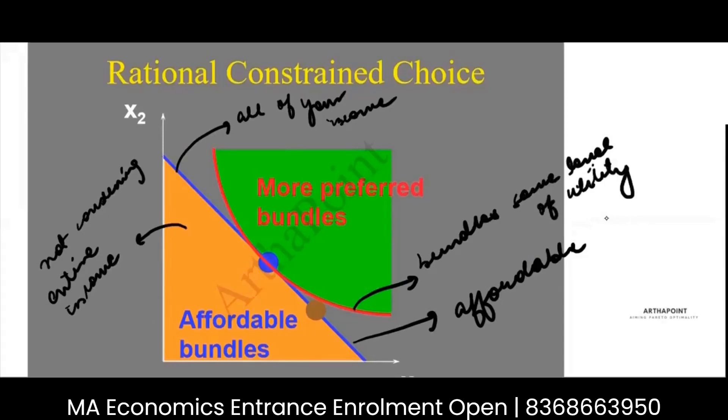But above the indifference curve, assuming well-defined preferences and assuming that monotonicity exists, we would assume the higher the bundle or the higher the indifference curve, the more is the utility. This is clear to us.